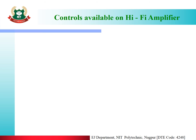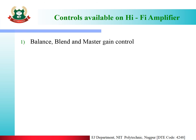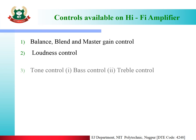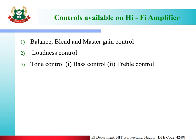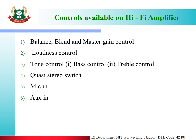The controls available on the hi-fi amplifier are: balance, blend, and master gain control. Second is loudness control. Third is tone control, which includes bass control and treble control. Then there is a quasi-stereo switch, mic input, aux input, and earphone input. These are the different controls available on the hi-fi amplifier.